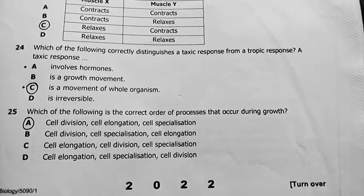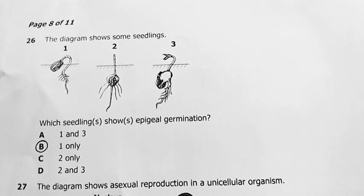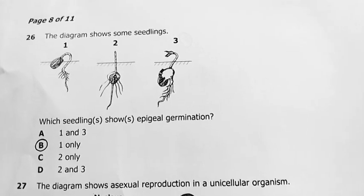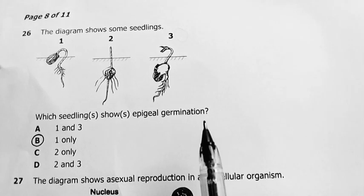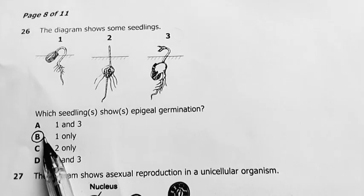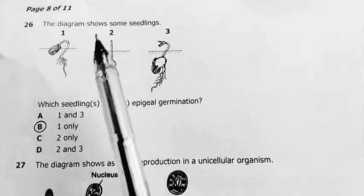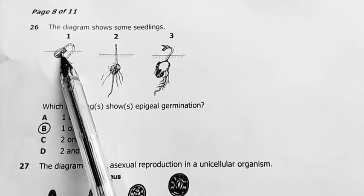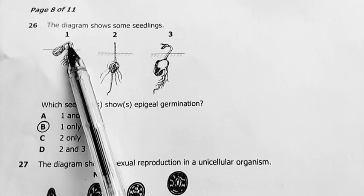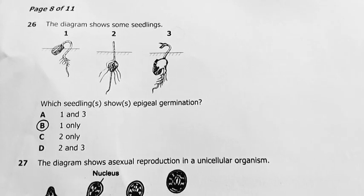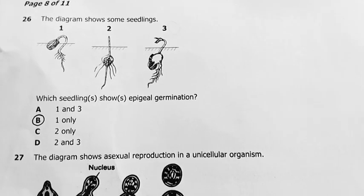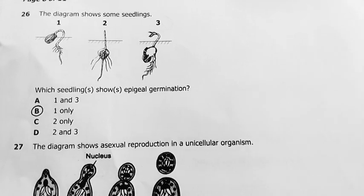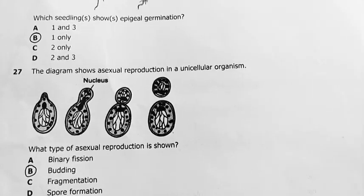Question 26: the diagram shows some seedlings. Which seedling shows epigeal germination? My answer is B only, where the cotyledons come out and follow the plant as it comes out of the ground. So my answer here is B.